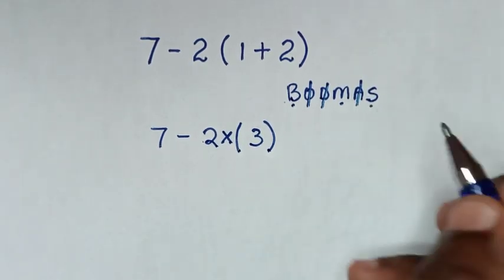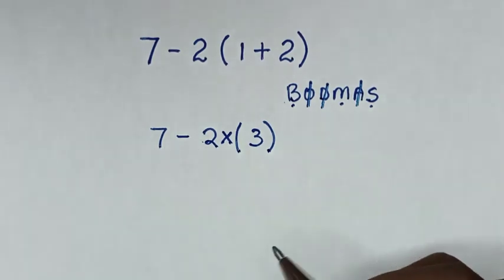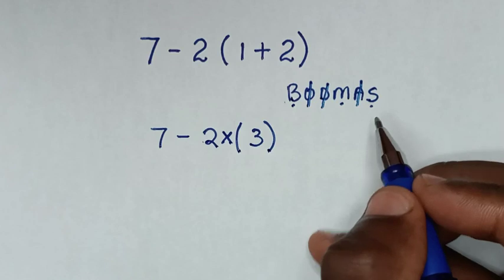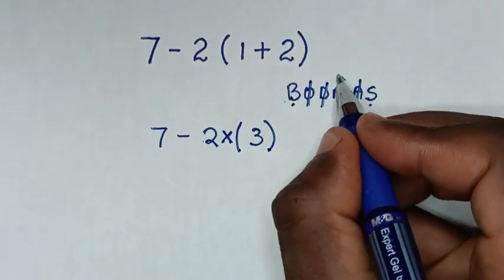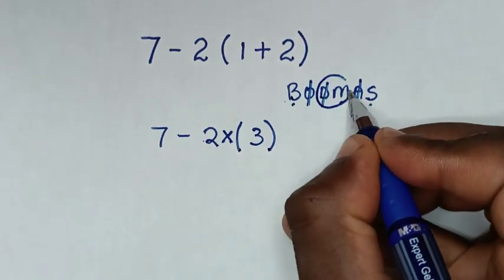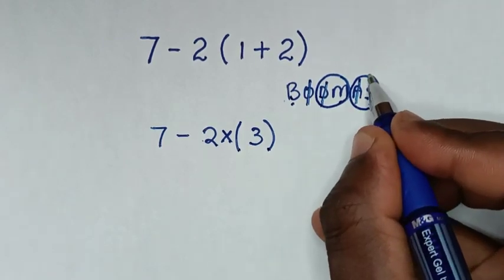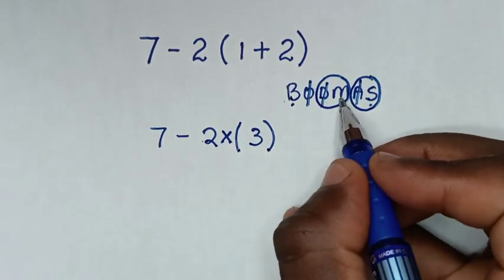We have subtraction. From division, multiplication, addition, and subtraction, there are groups: division and multiplication is one group, and addition and subtraction is another group. So we deal with division and multiplication according to which starts first.